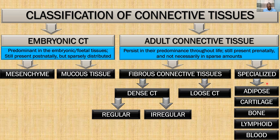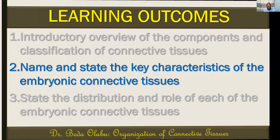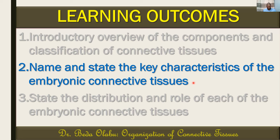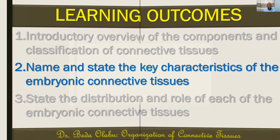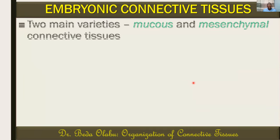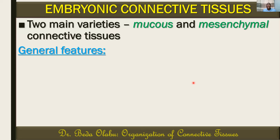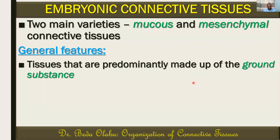This is the general classification of connective tissues. But the subject matter of this lecture is the embryonic connective tissues. One of the most significant general features is that these tissues are predominantly made up of ground substance. The matrix consists of connective tissue fibers and ground substance, and embryonic connective tissues have more of the ground substance — in other words, less of the connective tissue fibers and very few cells.